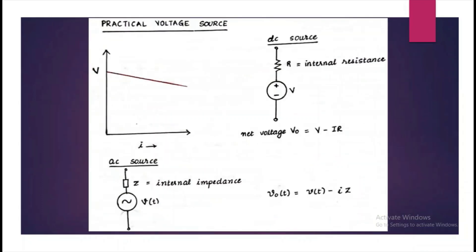The next is a practical voltage source. In practical sources, we have an internal resistance for that source. Due to this, there will be a drop IR and the net voltage is reduced and it will not be a constant. The voltage decreases as the current drawn from it increases.